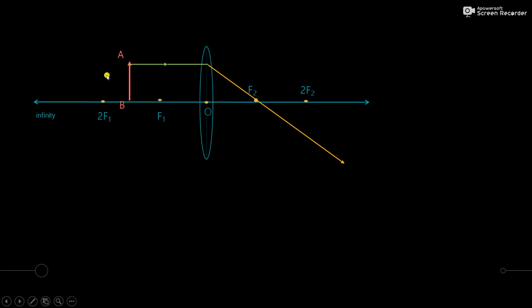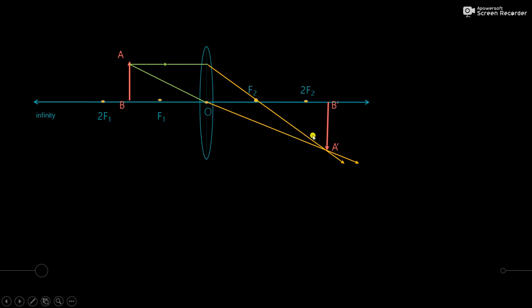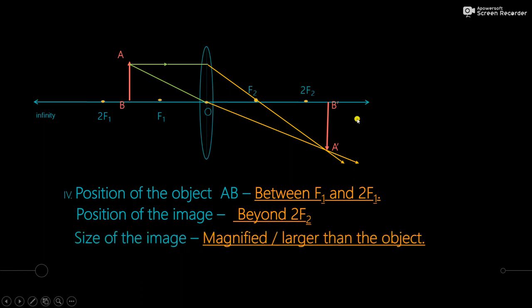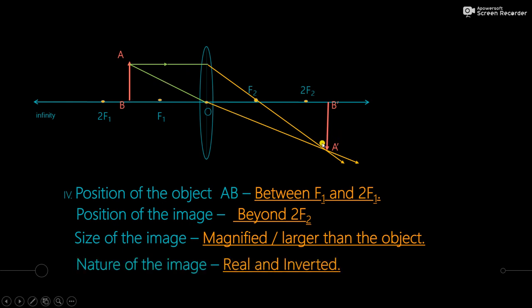Fourth ray diagram: the object has moved still further, now between 2f1 and f1. As the object moves forward, the image also moves forward. The image formed is beyond 2f2. The size of the image is magnified — larger than the object. The nature of the image is real and inverted.